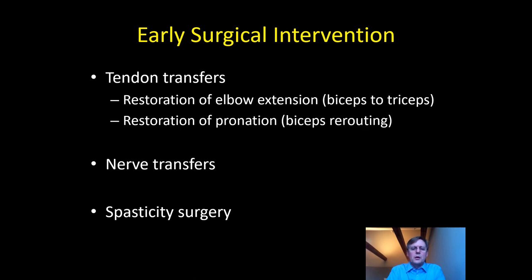Nerve transfers undoubtedly work best in young patients and early. If we have a young patient — say under 35 arbitrarily — who would be suitable, we'd aim to meet with them at three months from injury. If the rehab team are happy they're in a position to talk about this, we go through the concept, answer questions, and if they're interested we start making plans for surgery at the six-month mark, with the definitive decision made at the five-month mark. So: see them at three months, start considering and planning, with the aim to get the nerve transfers done by six months.